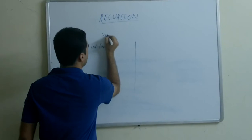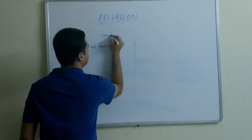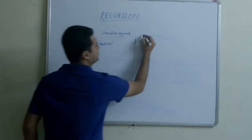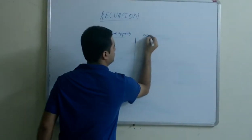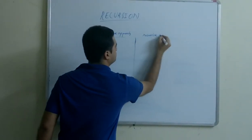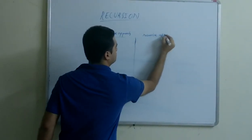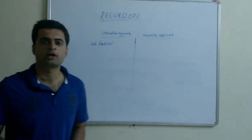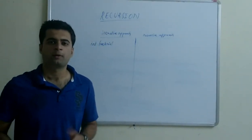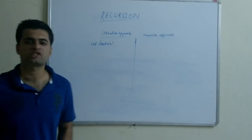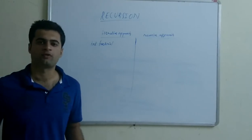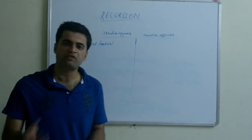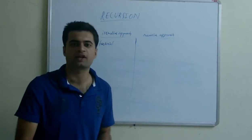This is the iterative approach. By iterative approach, I mean by using loops — that is, for loops, while loops. And by recursive approach, I mean by calling the function itself again.